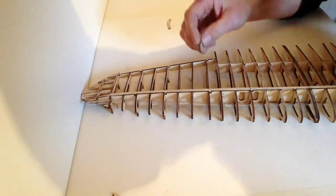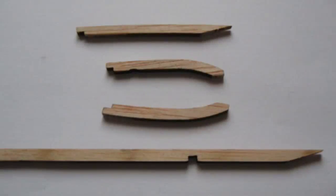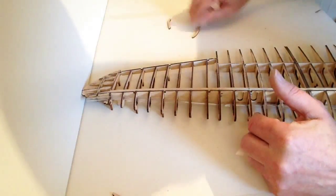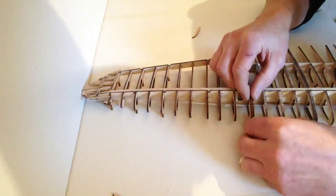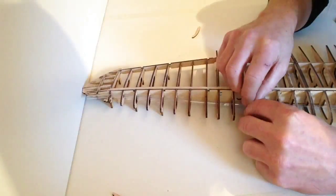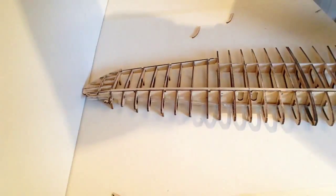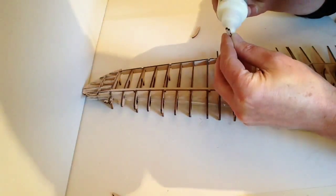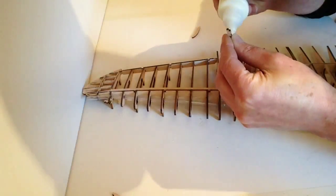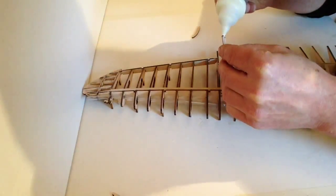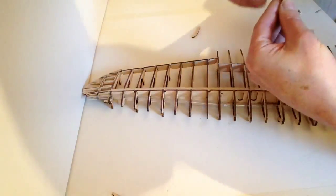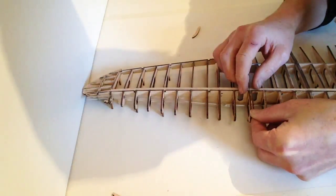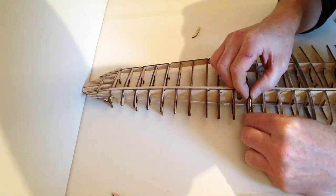Now we're going to be placing the two reinforcement ribs here, so just test fit them to make sure that you got them the right way. Then take your glue, apply a small amount of glue on the inside edge and the little edge there, then take your rib and place that into position, making sure that the top is nice and flush, and just remove any excess glue.